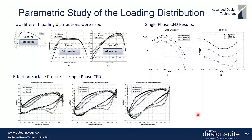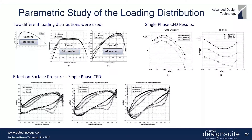They conducted a parametric study where the baseline impeller was front-loaded. They then looked at a mid-loaded distribution (design LD1) and an aft-loaded distribution (design LD2). Stage CFD was run on these designs, and here you can see the surface pressure results: the baseline is shown in black circles, LD1 with open diamonds, and LD2 with open triangles.